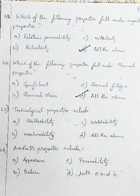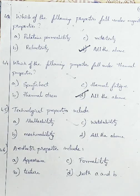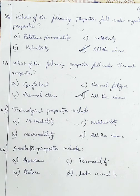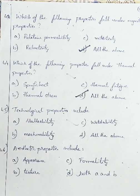Question number 45: technological properties include — Option A: malleability, Option B: machinability, Option C: weldability, Option D: all the above. Malleability, machinability, and weldability all involve use of machines and come under technological properties. So we are going with Option D, all the above.